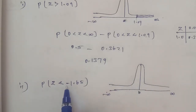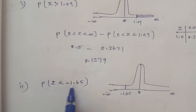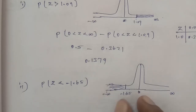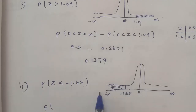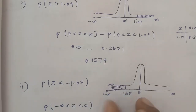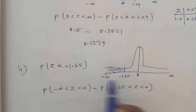For the condition Z less than minus 1.65, since this is a negative value, we mark minus 1.65 on the left side of the curve. Using the symmetry property, P(Z < minus 1.65) equals 0.5 minus P(0 < Z < 1.65). So we compute 0.5 minus the table value for 1.65.